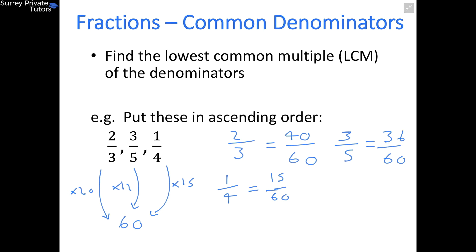When you're writing your final answer, just be careful that you write the fractions out in their original form. So the smallest one is 15 over 60, which is 1 quarter, so that goes first. Second biggest is 36 over 60, which is 3 fifths. And then the largest is 40 over 60, which is 2 thirds. And that's your final answer.